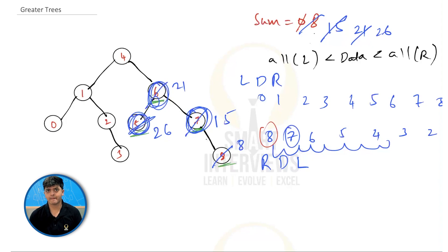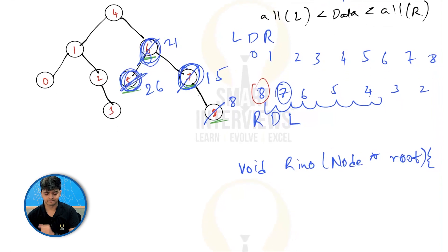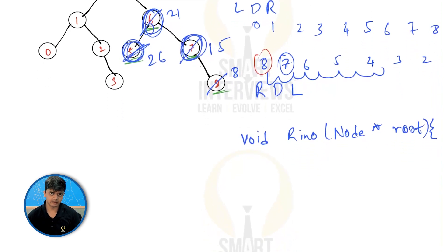How do we write the code for this? The code for this is going to be similar to in-order, but in reverse. So you will have reverse in-order function, which will get the root as a parameter for this. The return type is going to be void, because you're replacing the value of each node. You're not returning anything, you're replacing. So return type should be void. Now, what should I do?